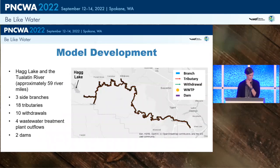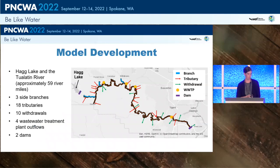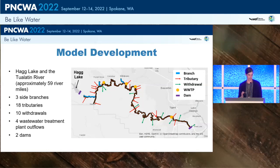For this system — Hag Lake and the Tualatin River — it's approximately 59 river miles. We also modeled three side branches, 18 tributaries, 10 withdrawals, those four wastewater treatment plants, and two dams: one at Hag Lake and one at the end of the model domain at the Lake Oswego Diversion Dam. The side branches differ from tributaries in that they're larger inputs requiring separate bathymetry and model grid that connect to the main stem. Tributaries and wastewater treatment plants are treated as point source discharges into the system.